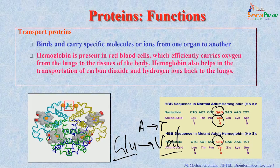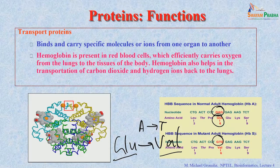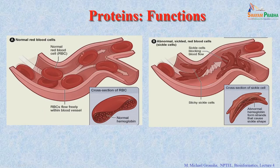The change creates a hydrophobic environment. This valine tries to interact with other hydrophobic residues in the other chain, in their hydrophobic pocket. Because of these interactions, it is not able to have the proper interaction and tends to form fibrils. Because of these fibrils, they change the shape from the regular one into a sickle shape.